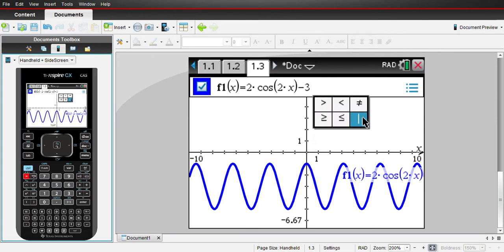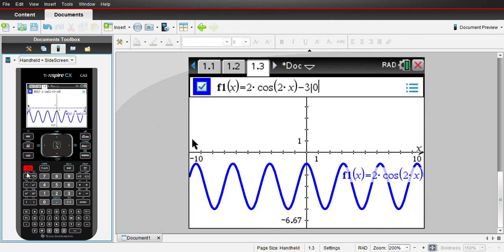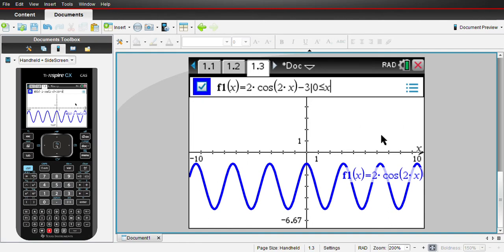This just separates the actual function from where you want the domain to be set. If we were going to look at a couple of rotations, we'll go from 0 to 4π. All your less than and greater than symbols are in here.